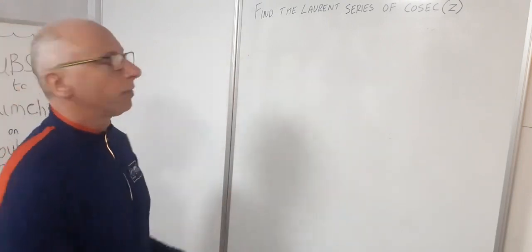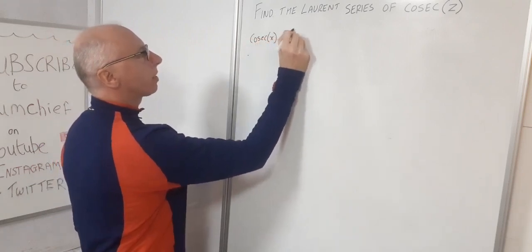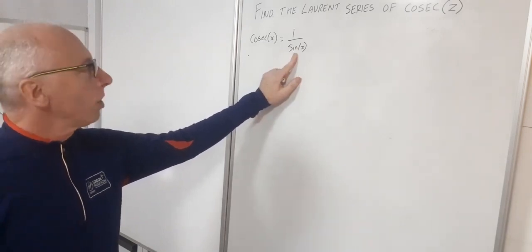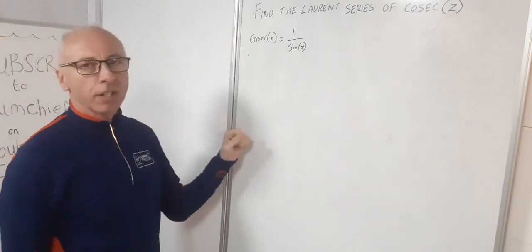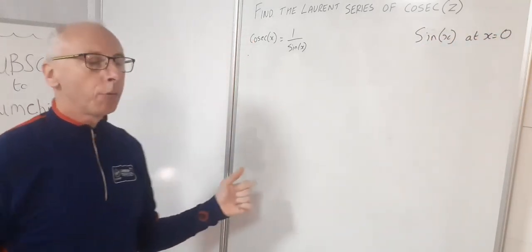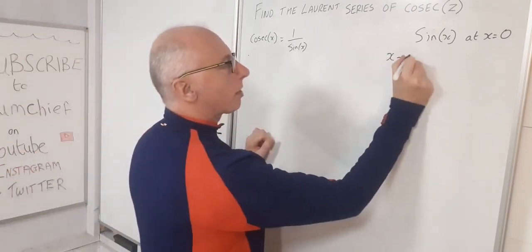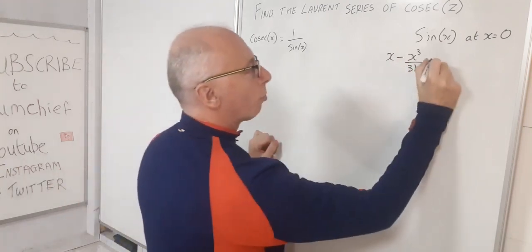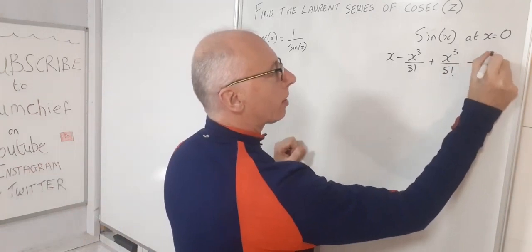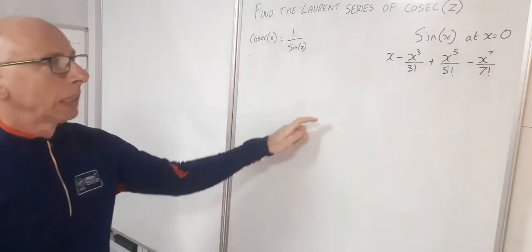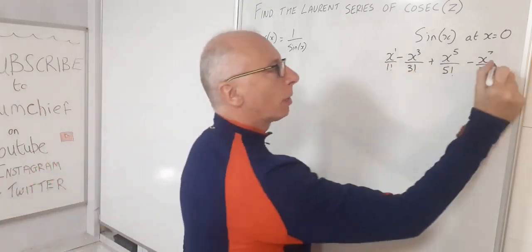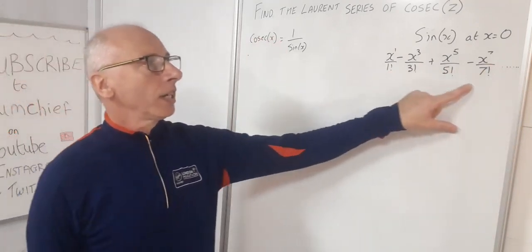We know that the cosecant function — cosecant of X — is the same as 1 over sine of X. To find our Laurent series we can still use the Taylor series for the sine function at zero. The Taylor series for sine of X at X equals 0 is: X minus X cubed over 3 factorial plus X to the 5 over 5 factorial minus X to the 7 over 7 factorial — all the odd powers, alternating, going off to infinity.